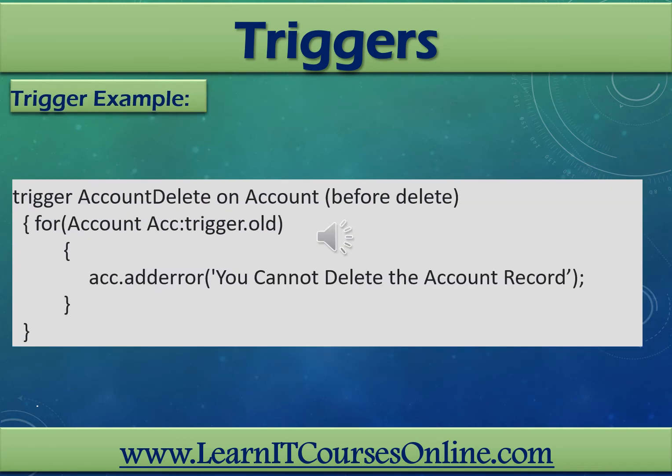Let's examine another trigger. In this case, the message on the fourth line uses addError(). Before we delete any record from the Account object, it places an error message on the screen that says: 'You cannot delete the account record.'